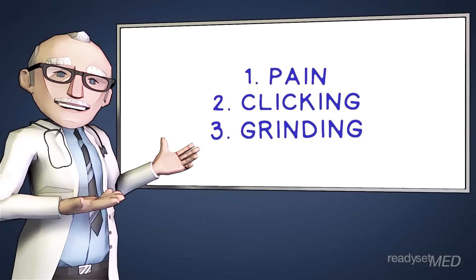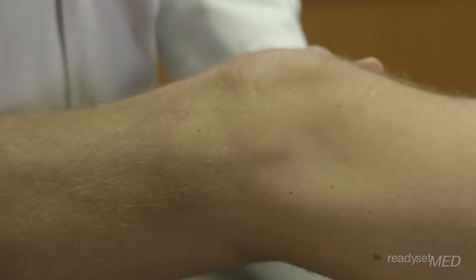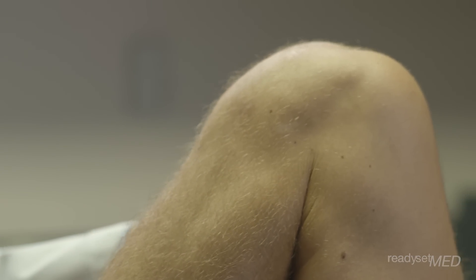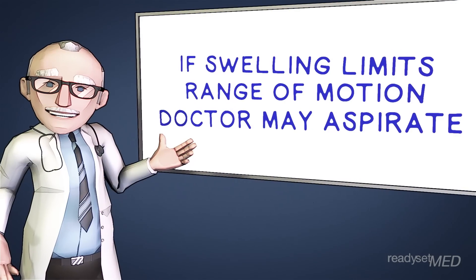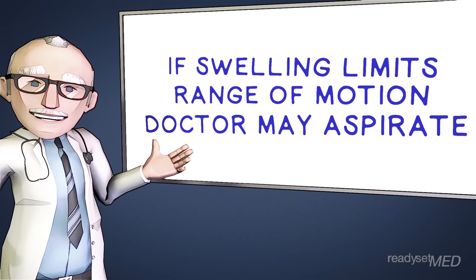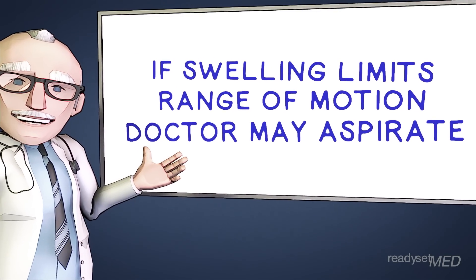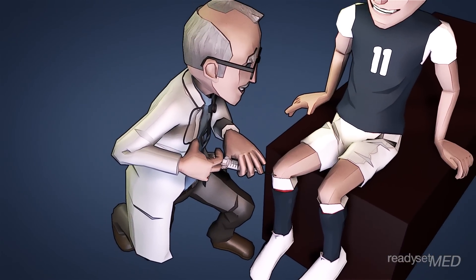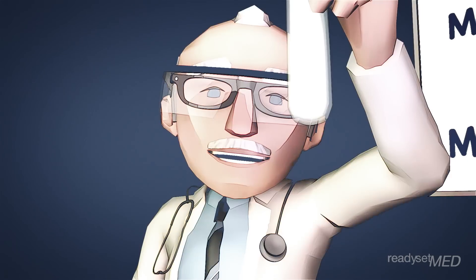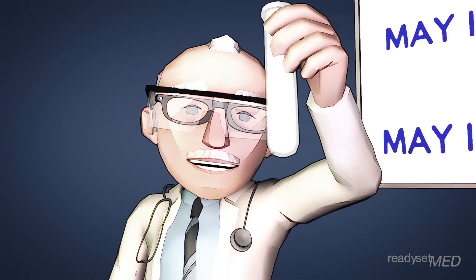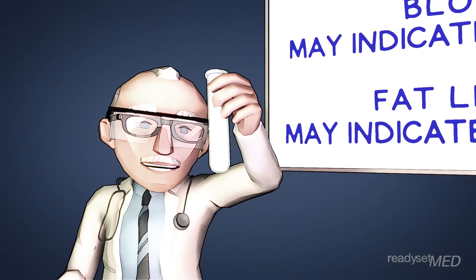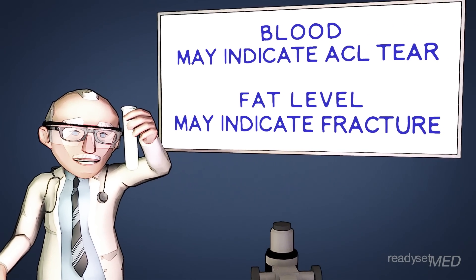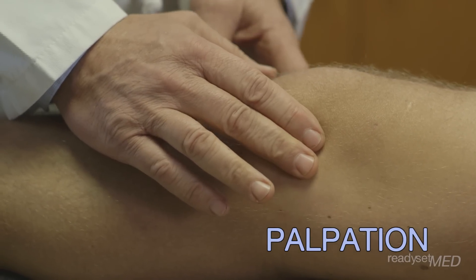Next, the doctor will check the knee's range of motion. It's important to report pain, clicking, or grinding that occurs as your knee goes from full extension to full flexion, as this can provide clues to possible structural injuries. Sometimes significant swelling of the knee can limit your motion, and your doctor may elect to aspirate or drain your knee. This can relieve the pressure and also provide clues — for example, after an acute injury such as an ACL tear, the fluid will likely appear bloody.